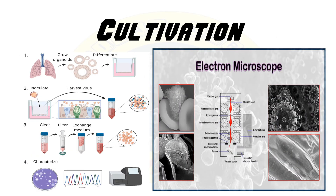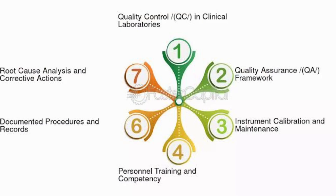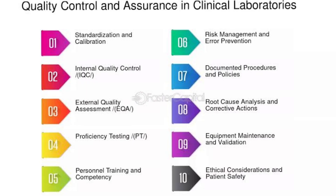Cell culture is another valuable diagnostic tool. Respiratory specimens are inoculated onto susceptible cell lines such as LLC-MK2 or Vero cells. If HMPV is present, it will induce characteristic cytopathic effects such as syncytium formation within a few days. Confirmation of HMPV can be achieved through immunostaining or molecular techniques. While RT-PCR and immunofluorescence assays are preferred for their rapid turnaround times, cell culture remains a gold standard method for virus isolation and further characterization; however, it is more time-consuming and requires specialized laboratory facilities.